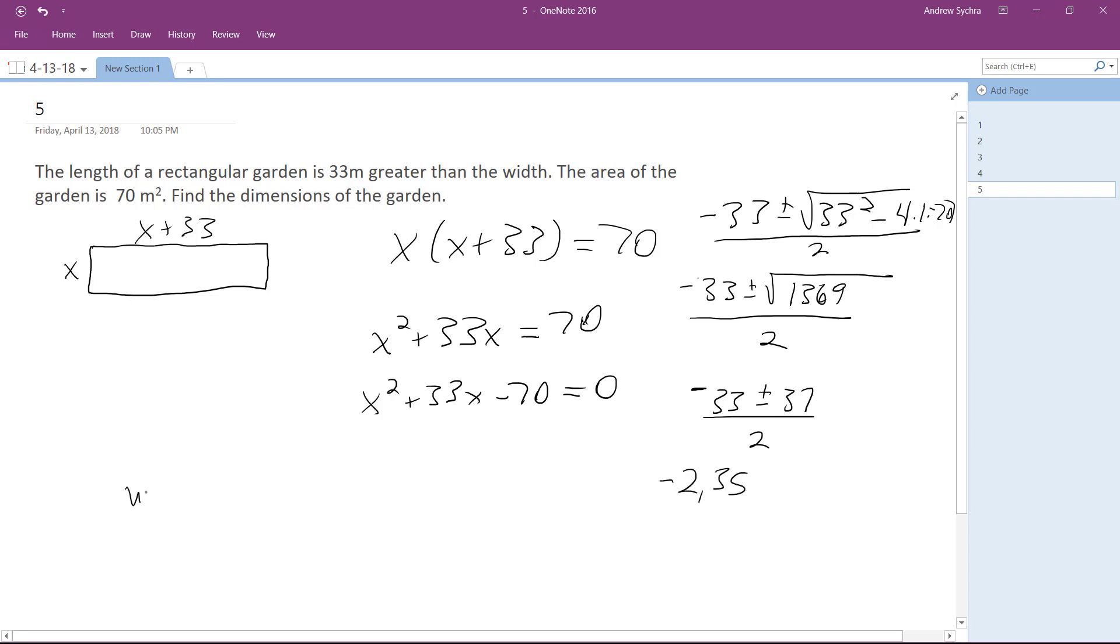So width is equal to 2 and length is equal to 35. And that makes sense because 35 times 2 is equal to 70. Alright.